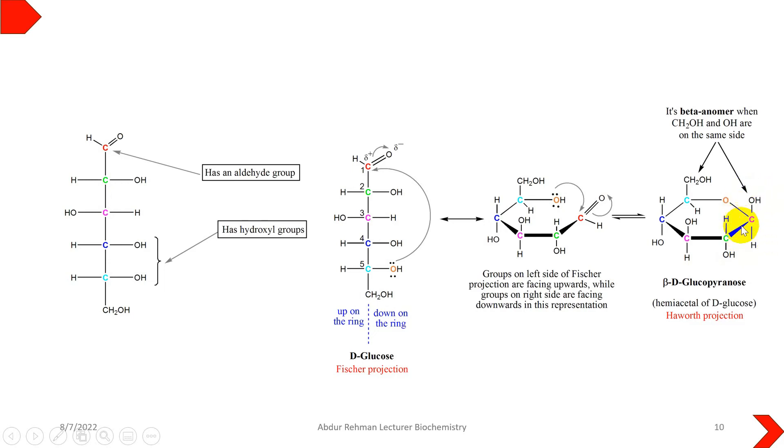One more thing to remember: the six-carbon monosaccharides can have pyranose or furanose structure. If it adopts a five-ring structure it will be known as pyranose; if four-ring structure it will be termed as furanose.